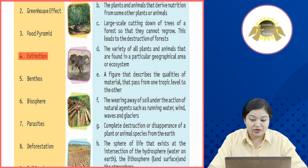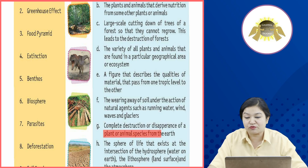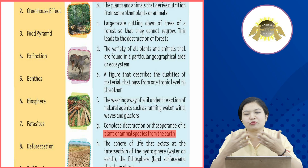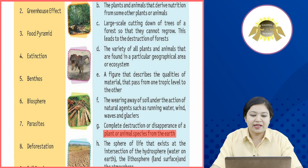Fourth: Extinction. What does it mean? The complete destruction or disappearance of a plant or animal species from the earth. The plants and animals that have disappeared from our earth — what do we call them? We call them extinct.